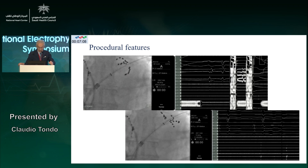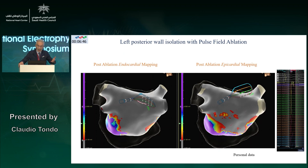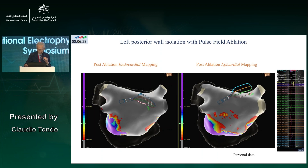It took 15 minutes to isolate the pulmonary veins and nine minutes for isolation of the posterior wall, with a fluoroscopy time of 25.5 minutes. The slide shows the two configurations of the FaraPulse catheter — the basket and the flower shape as seen during the live case. On the right, you can see the complete disappearance of electrical activity from the pulmonary veins.